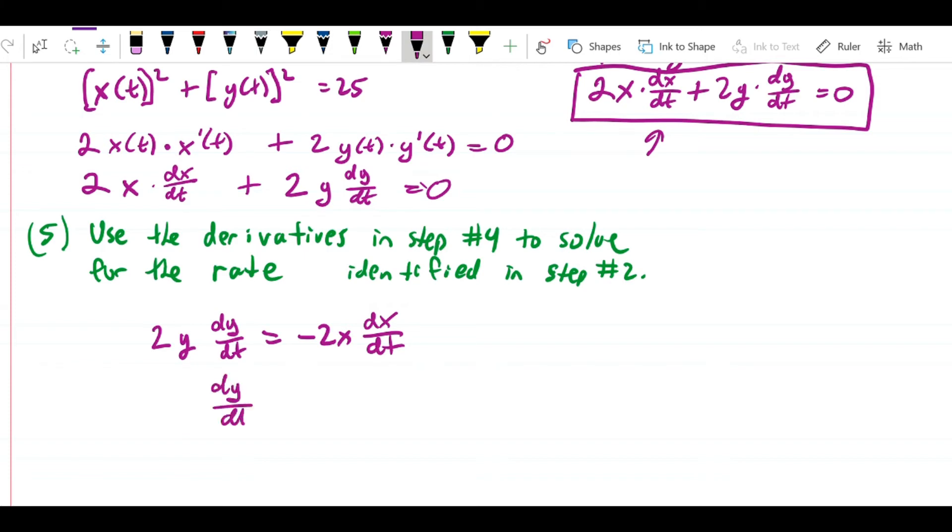Now I'm going to divide both sides by 2y, giving me dy dt equals negative 2x over 2y dx dt. And negative 2 over 2 is just negative 1, so I have negative x over y dx dt. Fortunately, I actually have all of these quantities.